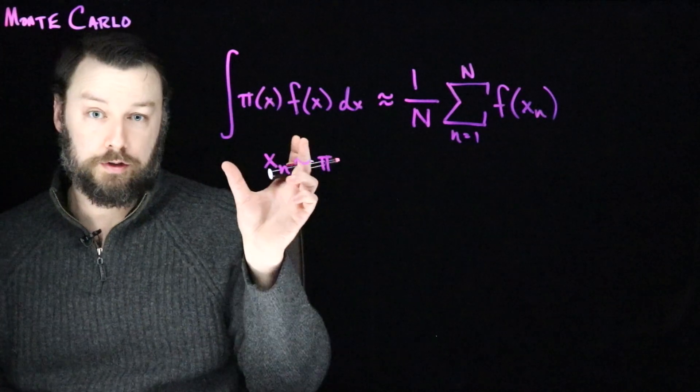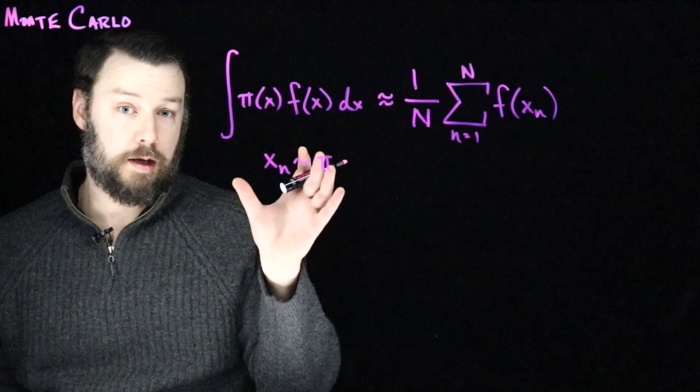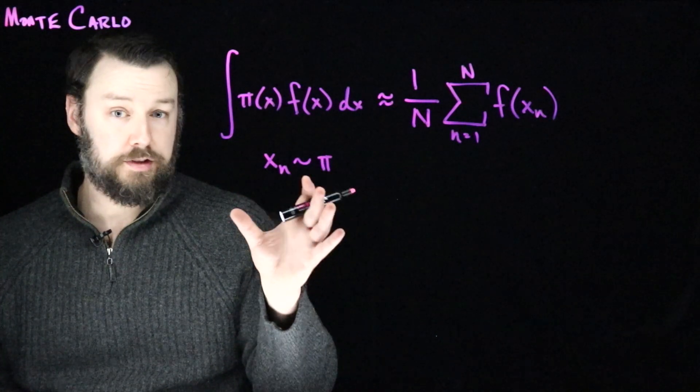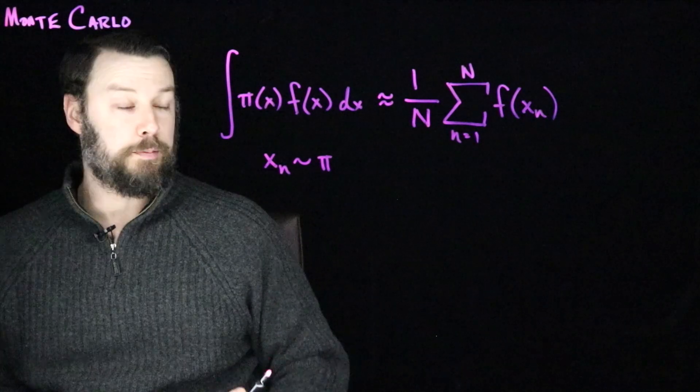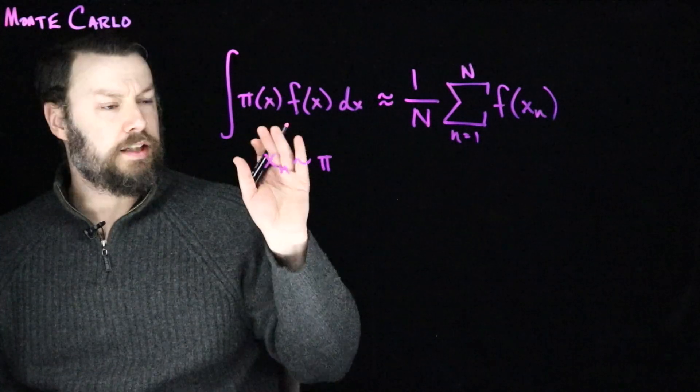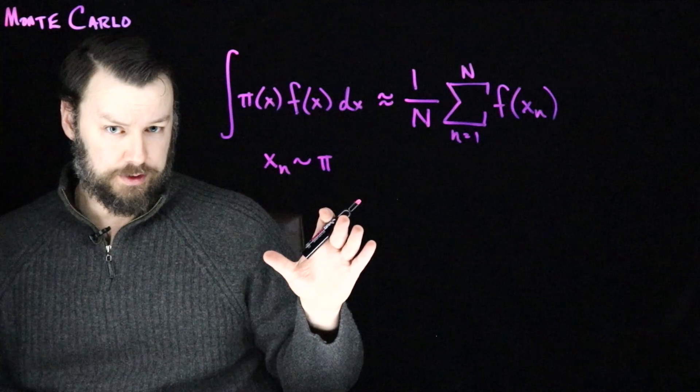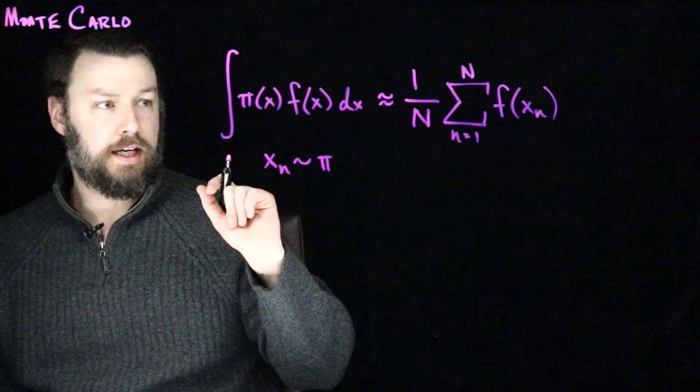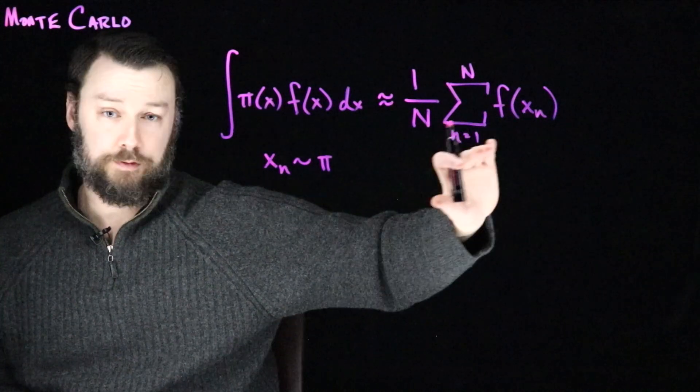This annoying integral, perhaps I can't do in closed form. Perhaps for whatever reason it's not possible to use traditional quadrature methods, things like Gaussian quadrature. Maybe it's too high dimensional to be able to do that. And so what I do is I get a noisy estimate in which I draw samples from pi, and I take those samples, plug them into f, and then average them.